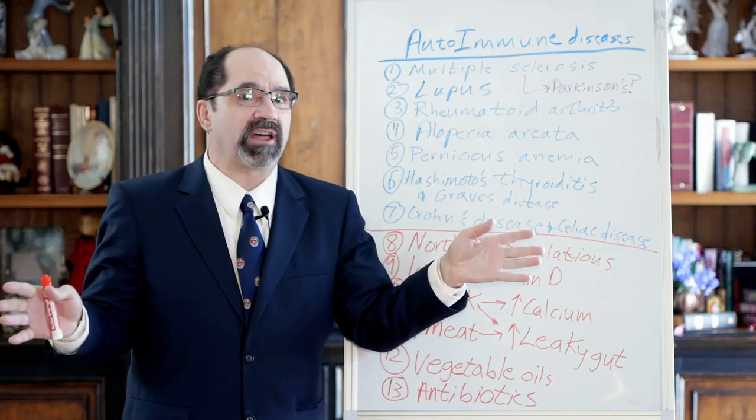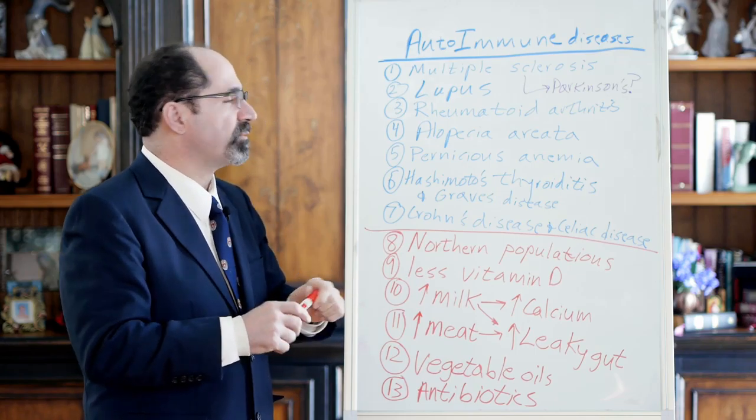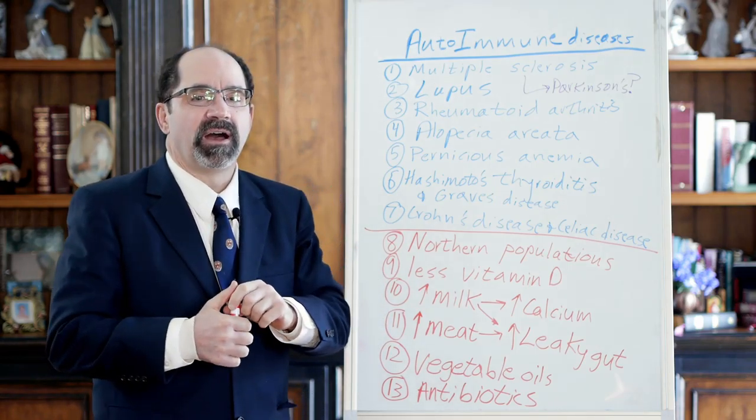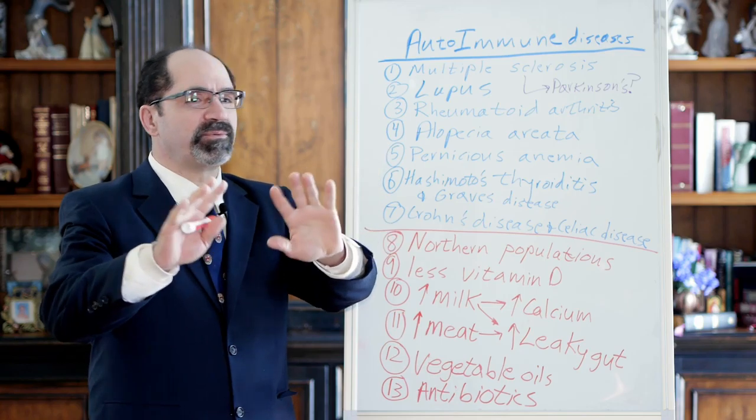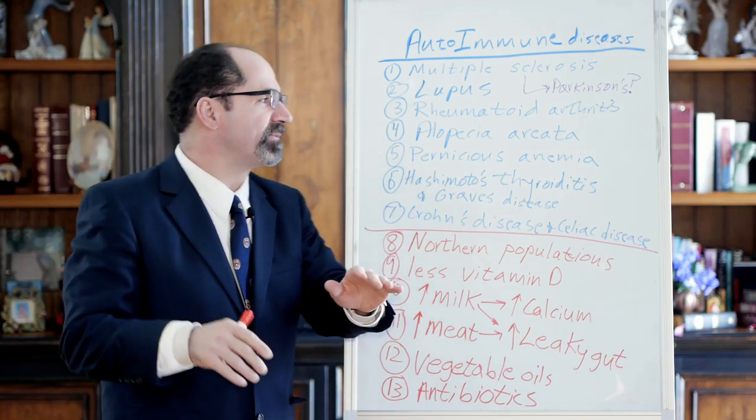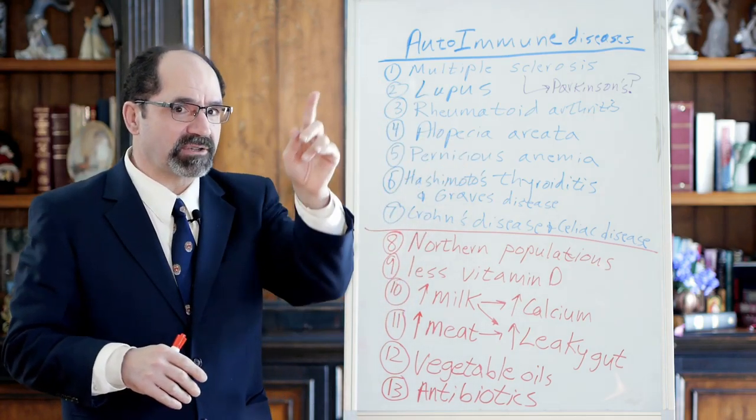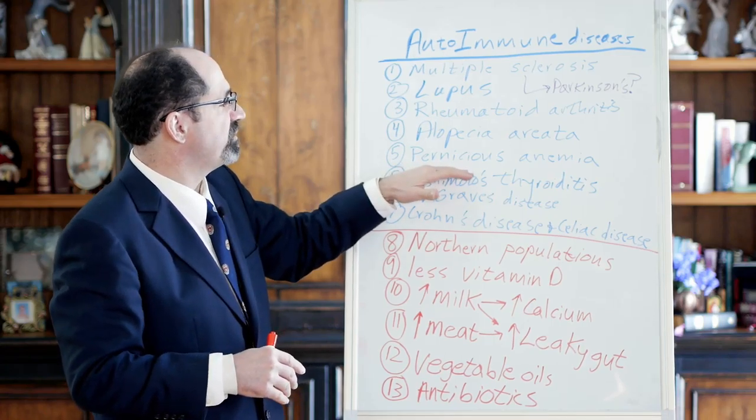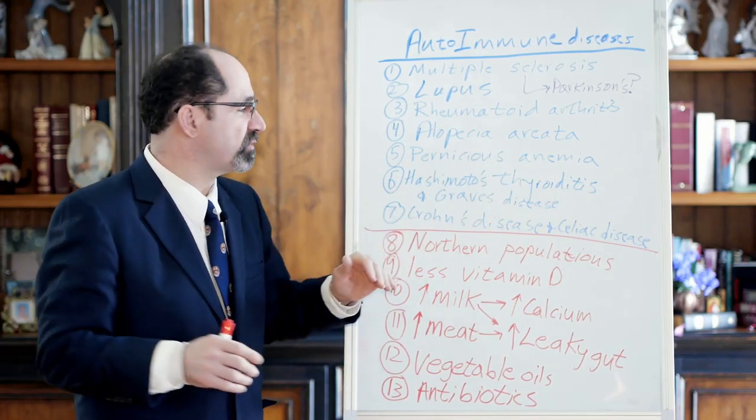The really famous vegetarian author Cyrus from Mastering Diabetes, really smart guy, he had a problem with that. He talks about it in his videos. Pernicious anemia, that's what causes vitamin B12 deficiency. That's an autoimmune disorder.